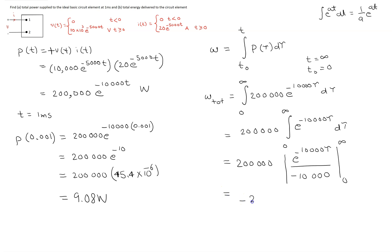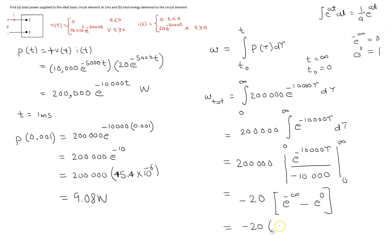This simplifies to minus 20, and substituting the limits gives e raised to the power minus infinity minus e raised to the power 0, which is 0 minus 1. Therefore the answer is minus 20 times negative 1, equal to 20 joules. Hence we have found the total energy delivered to this ideal basic circuit element.